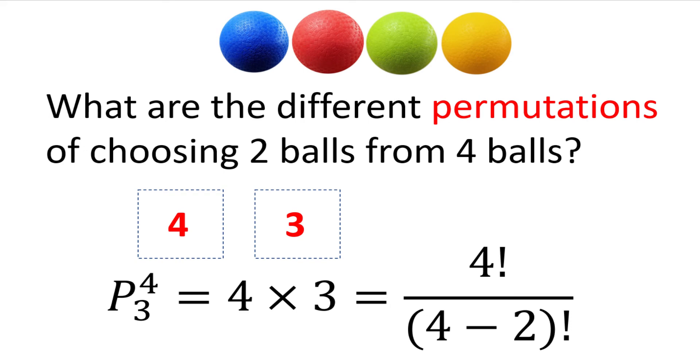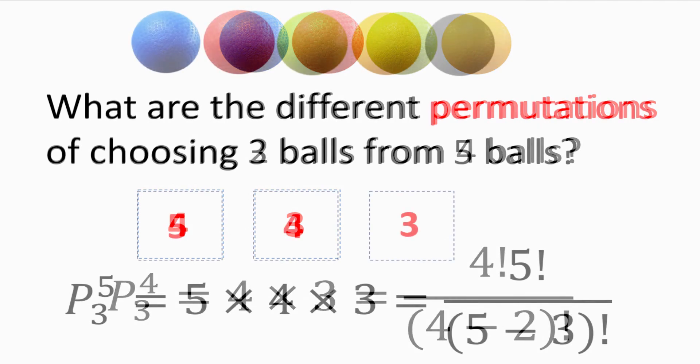Hence, the number of permutations of choosing two balls from four balls, which we represent in shorthand as P superscript 4, the total number of balls, and subscript 2, the number of balls to pick, will simply be four multiplied by three. Or one can write it as four factorial divided by four minus two factorial.